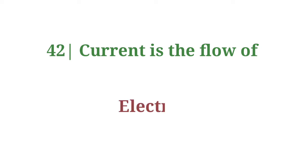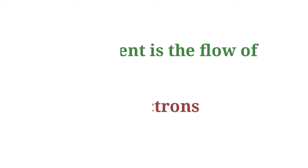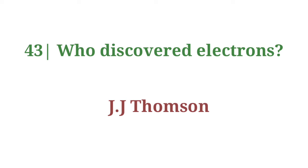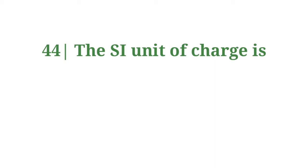Current is the flow of electrons. Who discovered electrons? Answer: J.J. Thomson. The SI unit of electric charge is Coulombs.